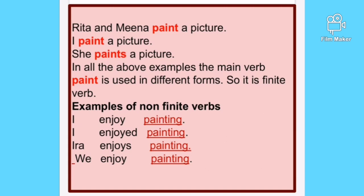Now let's see how the verb changes with person: 'I paint a picture,' 'You paint a picture,' 'She paints a picture.' Here 'I' is first person, 'you' is second person, 'she' is third person. The verb 'paint' changes according to the person. So a finite verb changes with tense, number, and person.